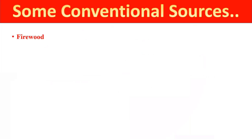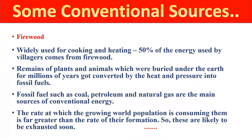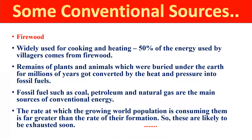Let's discuss conventional energy resources. The first one is firewood — it is very well known in Indian society. Firewood is widely used for cooking and heating. In villages, about 50% of energy needs can be met just by firewood. So in villages, it is a great source of energy and can be used for cooking and heating purposes.